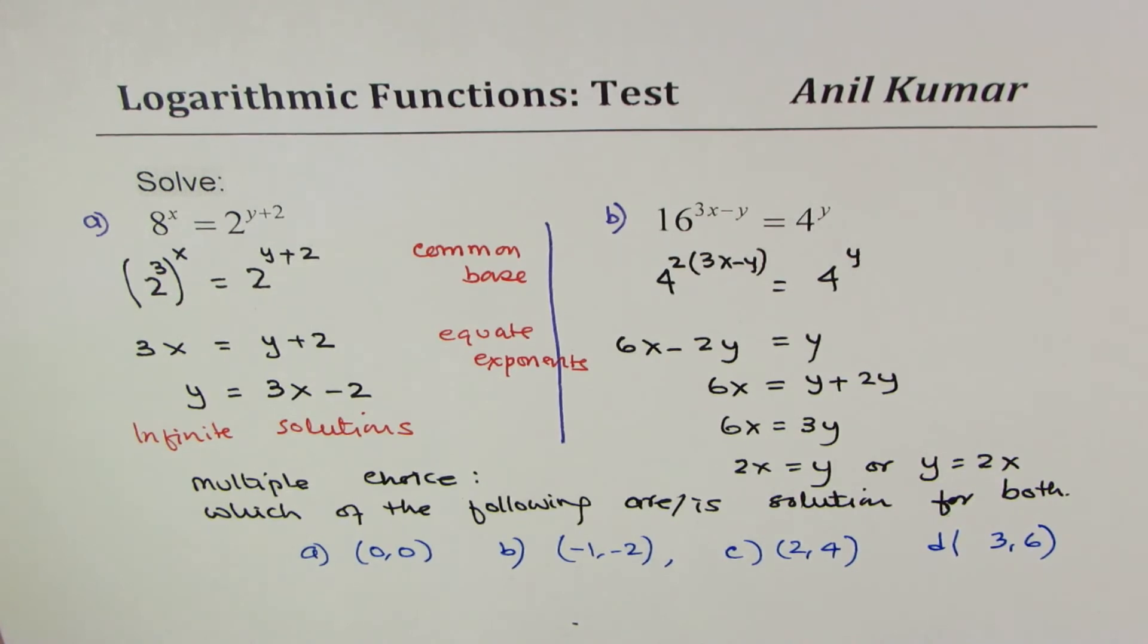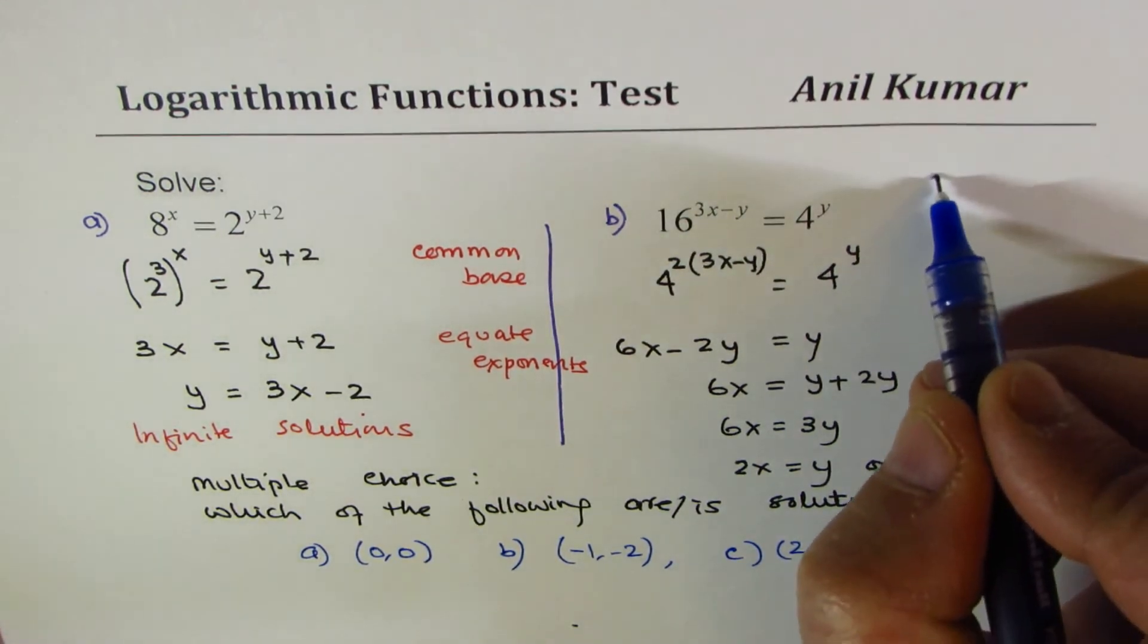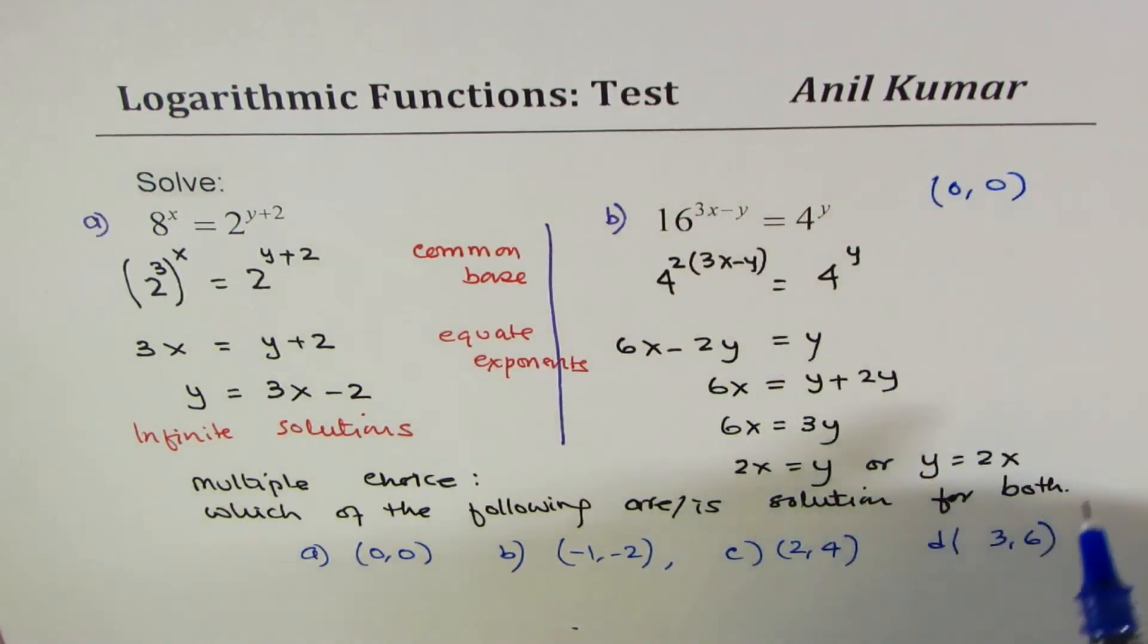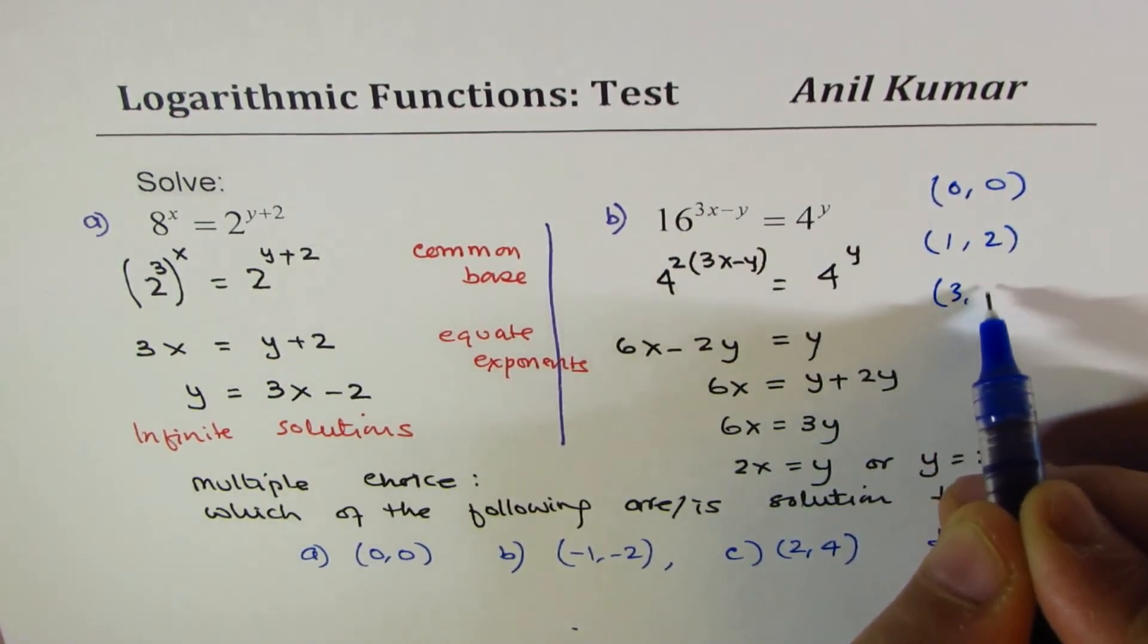As you realize that if we have exponents in two variables, then we have solutions where these two variables will be dependent. That will lead to infinite solutions. So in both cases, we have infinite solutions. For any value of x, twice that value will be y.